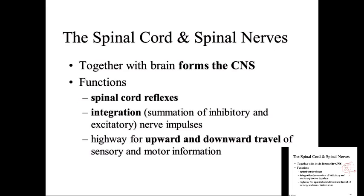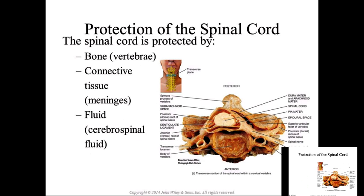The gray matter is everything within the letter H shape, and everything outside of that is white matter — it's myelinated. The highway for upward and downward travel of sensory and motor information takes place in the white matter. We have sensory tracts and motor tracts throughout that region, and we'll go through them shortly.